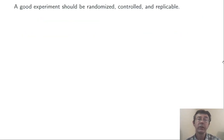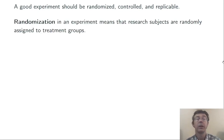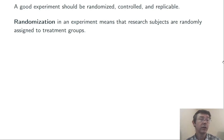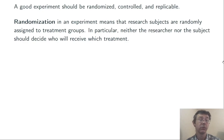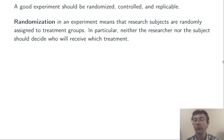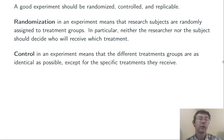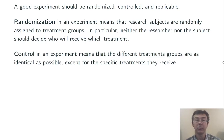Some characteristics of a good experiment: it should be randomized, controlled, and replicable. These are three important vocabulary words you should get to know. Randomization in an experiment means that the research subjects are randomly assigned to the different treatment groups. In particular, neither the researcher nor the subjects should decide who receives which treatments. Control in an experiment means that the different treatment groups are as identical as possible, except for the specific treatments they receive.